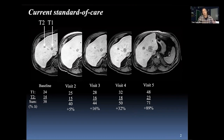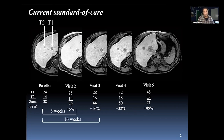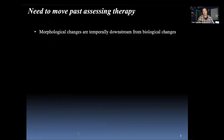The problem is that you're looking at morphological changes which are temporally way downstream from the underlying cellular and molecular mechanisms. Four months have passed where you're still calling this stable disease. And by the time you can call it progressive disease by the RECIST criteria, it's been six months — that is way too late.